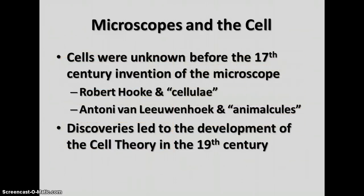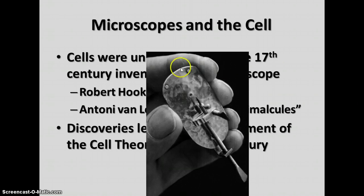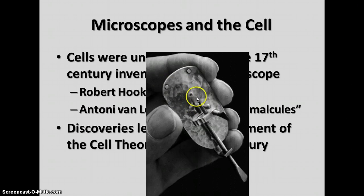The other person credited with discoveries about cells was Antony van Leeuwenhoek from the Netherlands. He was the first person credited with being able to see live cells under the microscope — he actually invented his own microscope. It was a very different looking microscope: two plates riveted together, with a little hole and a lens in between.